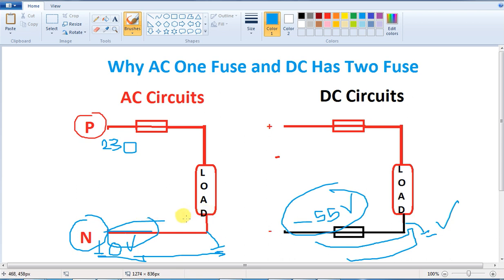If you look at the AC case, we don't need a neutral side fuse. In the final analysis, neutral is zero potential. But negative in DC has potential. So if there's a fault in the neutral, there's no risk. But on the negative side in DC, we need protection. That's why DC has two fuses and AC has one fuse.